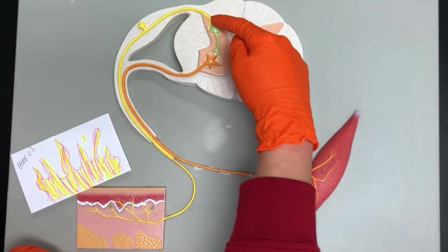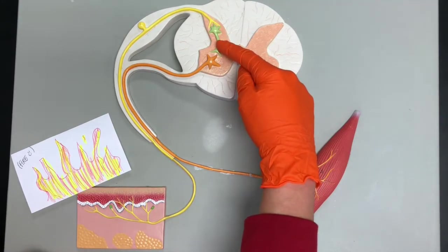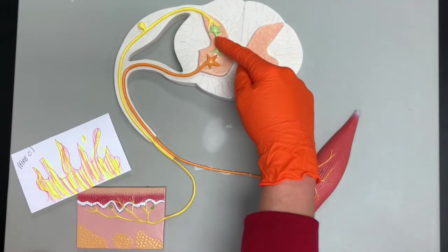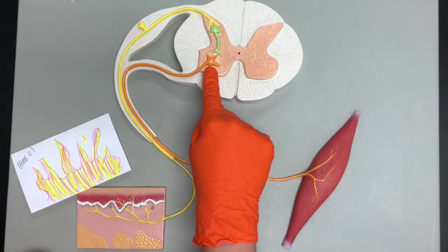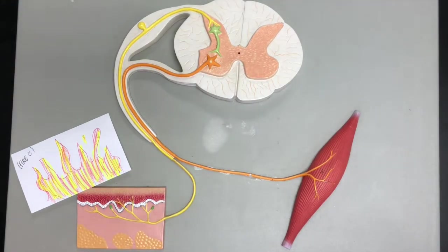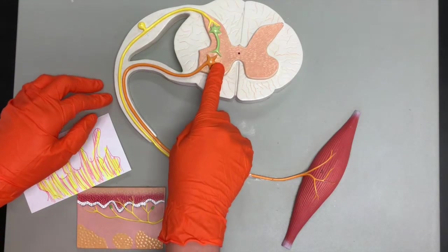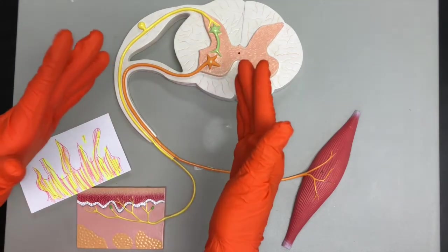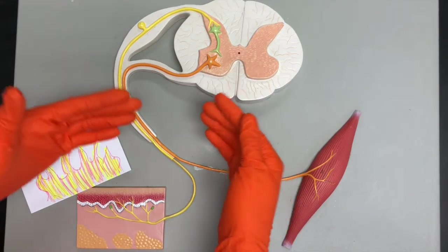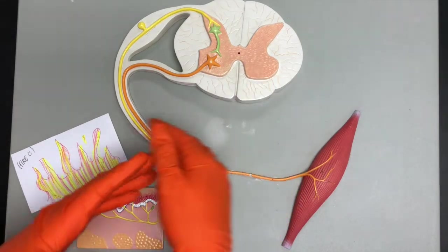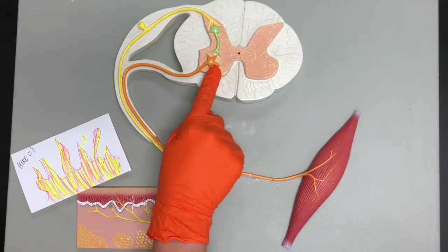So the sensory neuron connects to the interneuron and then the interneuron is going to connect to the motor neuron. That word motor should make us think of the word movement. So remember, all motor neurons have what shape? Multipolar.